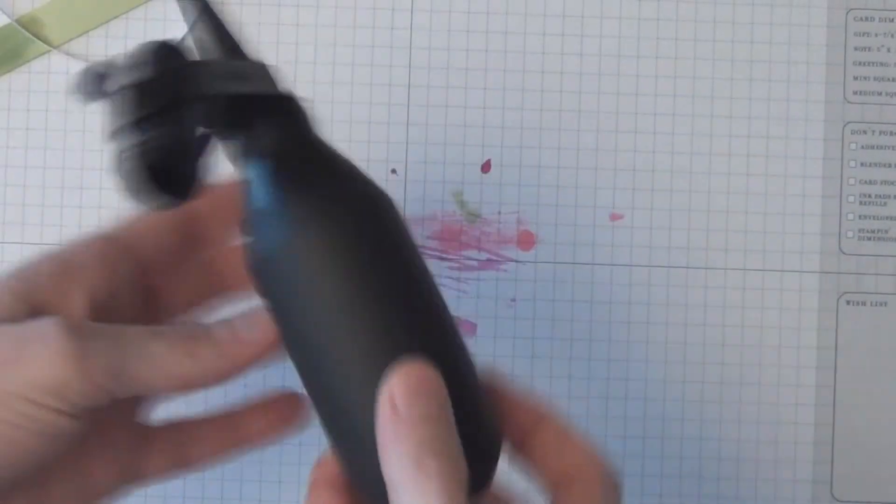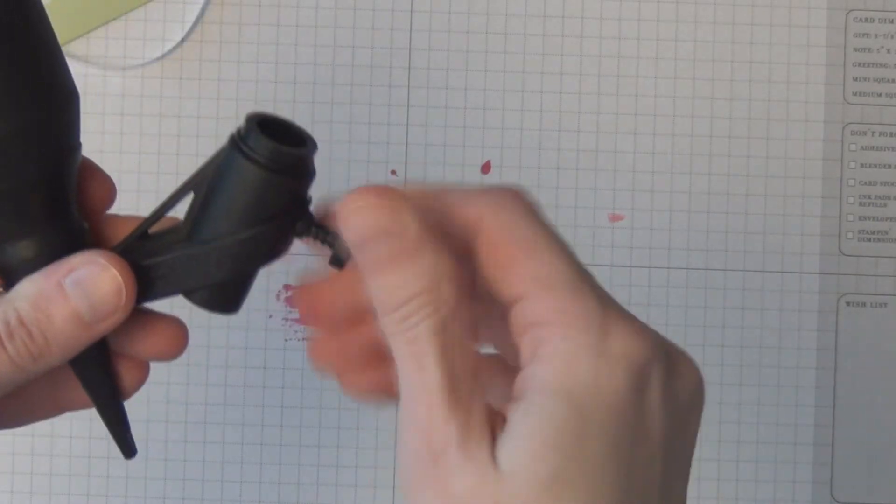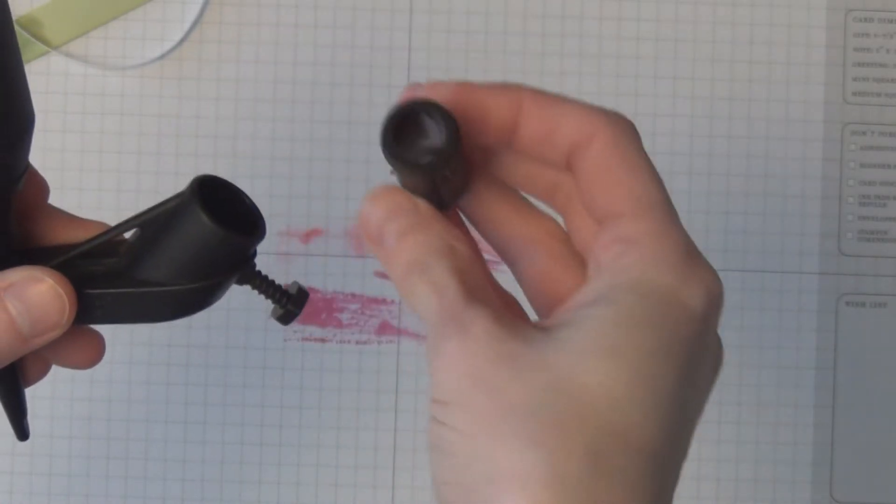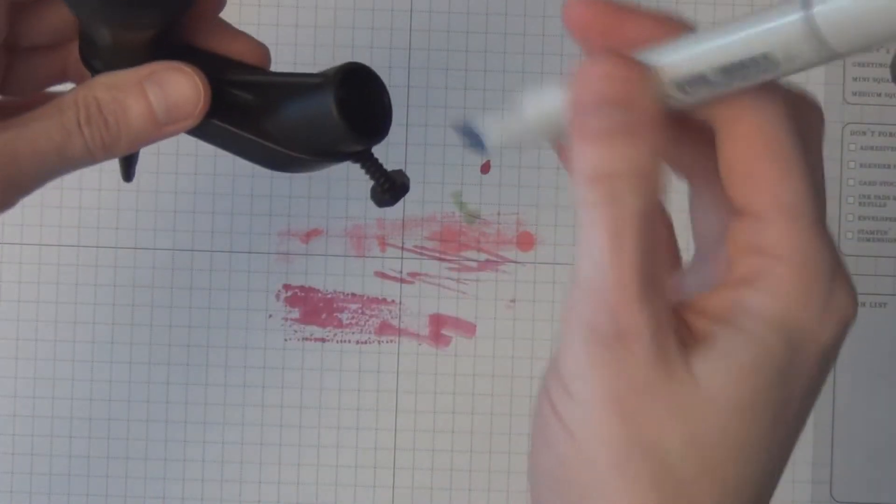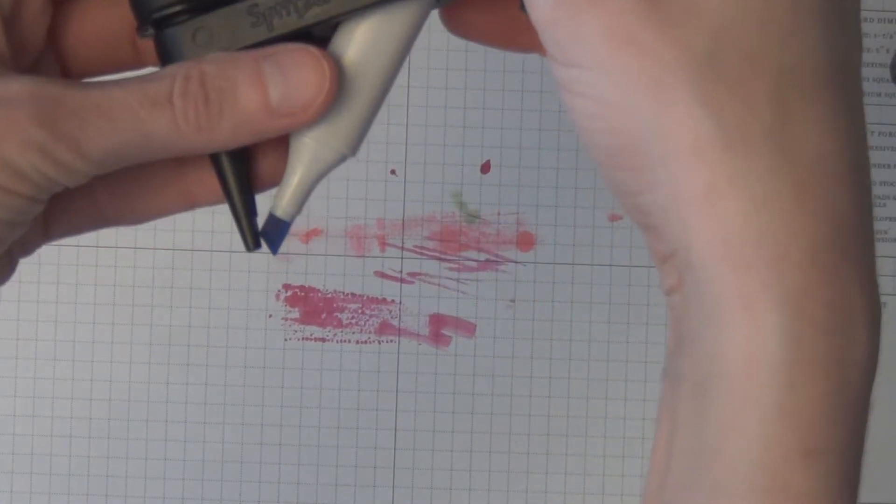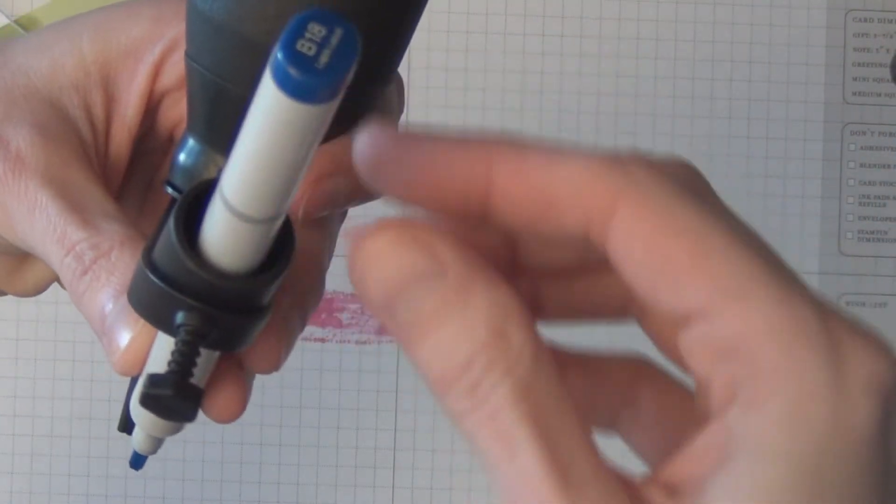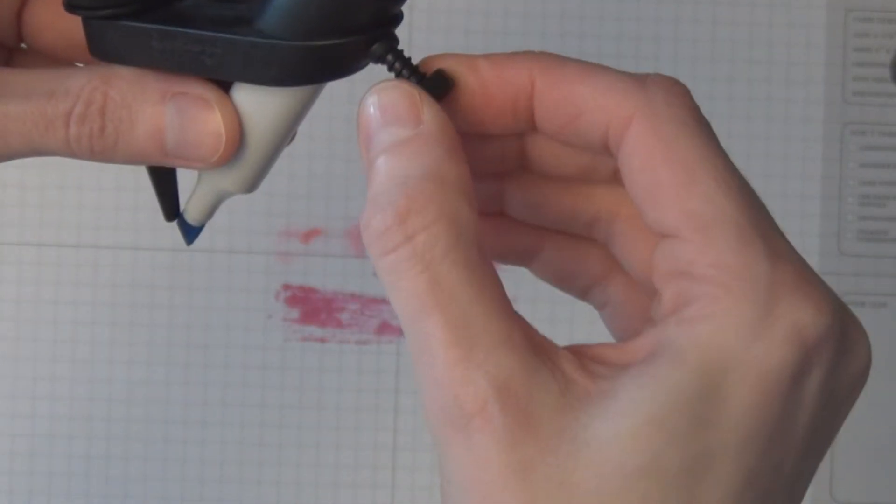And one of the last things. I don't know if anyone has one of these tools. A little spritzer tool. You can also put your Copics in this spritzer tool. All you do is unscrew the little screw thing here. Pop this part out. Put your Copic in. Line it up to the spritzer. And of course, since this Copic isn't round, it's more oval.